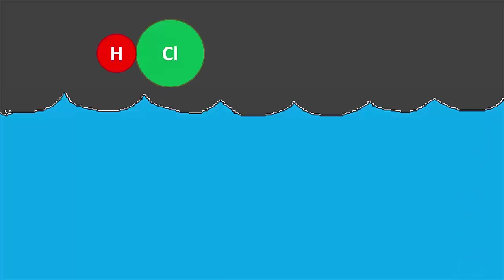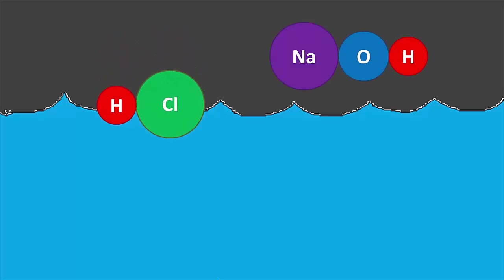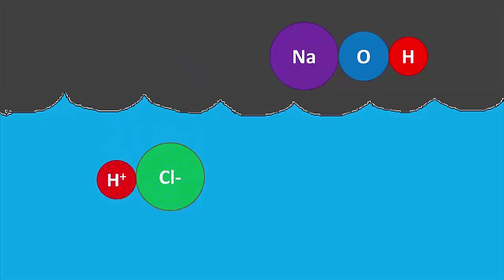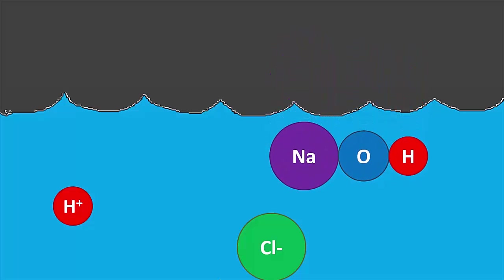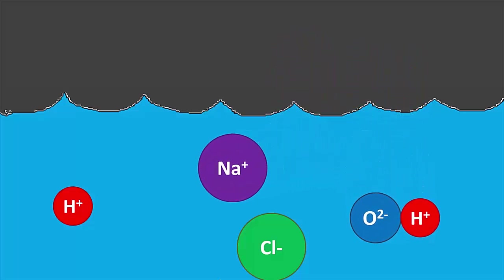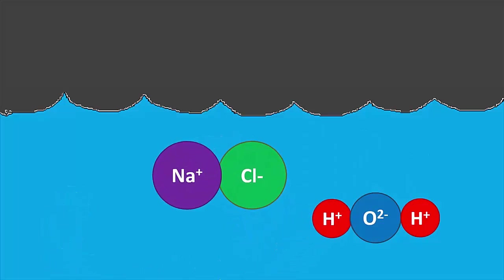So how does this work? If you have hydrochloric acid and sodium hydroxide and you put them in water, we know they're going to ionize. The hydrochloric acid turns into a proton and a chloride ion, and the NaOH turns into a sodium ion and a hydroxide ion. The proton and the hydroxide come together to form water, and the sodium and chlorine come together to form sodium chloride.